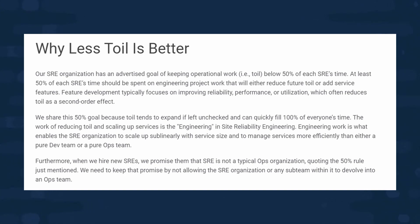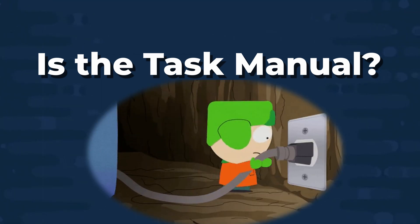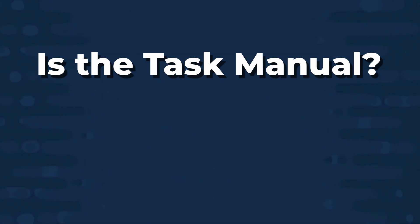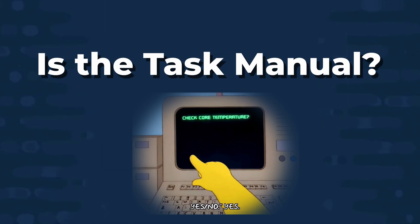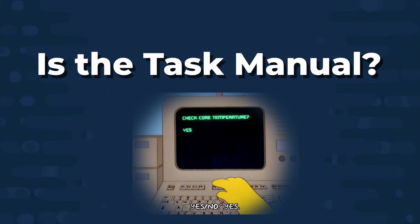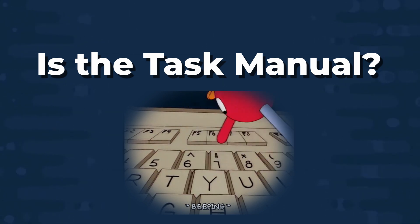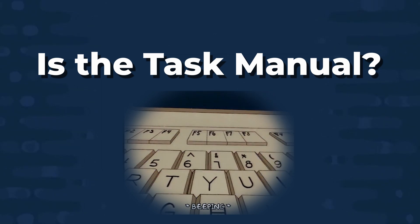Before we get into that, let's have a look at the main indicators of if a task is considered toil. The first indicator is if the task is manual. Something like restarting a server, or even running a script, is considered toil. Running a script may be faster than running each individual command, but it still requires human intervention. So we should be engineering solutions where we don't even need to have a human run the script. Obviously, that's kind of idealistic — there's always going to be manual tasks that exist.